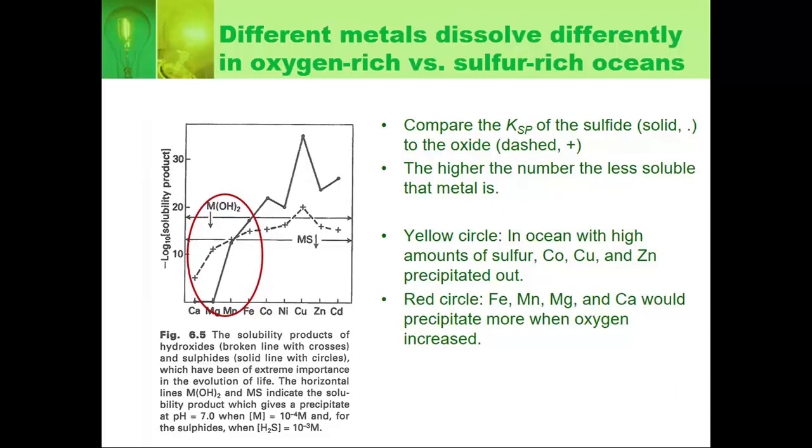And you can see that for magnesium, the solid line is the sulfide and the oxide is the dashed line. Is that correct? Sulfide is the solid line, yes. Hydroxide is the dashed line. Here, the sulfide is actually more soluble for magnesium. For manganese, they're about the same. And then for pretty much everything else, the sulfide is less soluble.